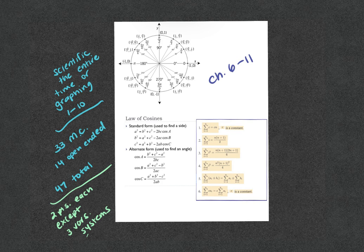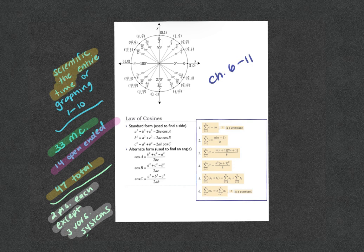The test itself is 47 questions total — 33 multiple choice and 14 open-ended, which is where your graphing, systems of equations, and similar work will be. Each question is two points apiece, except for two three-variable systems, which are worth double. You can use a scientific calculator the entire time, or a graphing calculator but only for the first 10 questions, then put it on the ground. Scientific is definitely your best option.